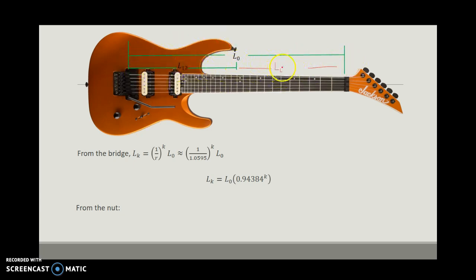That's the difference between the full length and the length that I already know. So if I want to know the distance from the nut, what I have to do is take the distance from the bridge and subtract it from L0. So from the nut, I would want to measure L0 minus L0 times 0.94384 to the k power. And that would tell me where I should position the fret from the nut.